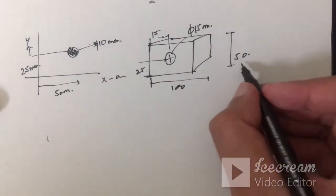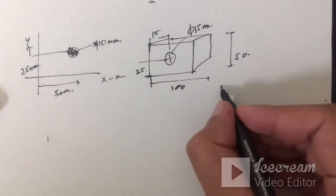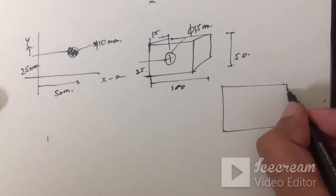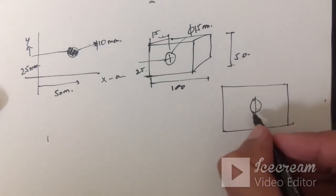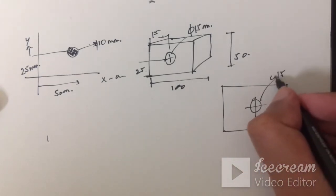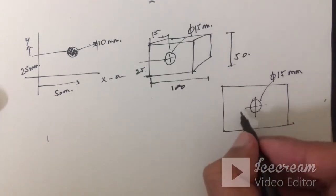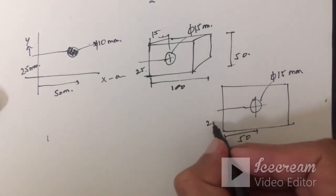Let's draw this in 2D view. So this is our cuboid here. This is a 15 mm hole which is 50 mm from this edge and 25 mm from this edge.